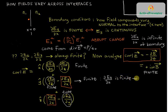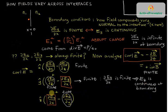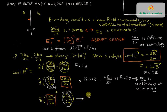Since dEz/dx is finite, Ez is continuous at the boundary. The exact same logic applies to the z-hat component of the curl: the entire curl component must be finite, one term is finite because the field doesn't change abruptly within one side of the interface, so the remaining term dEy/dx must also be finite. Therefore, Ey is continuous at the boundary.